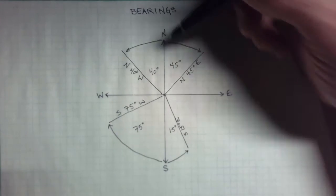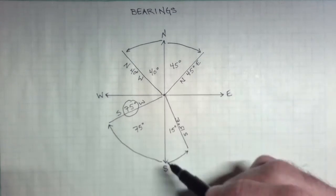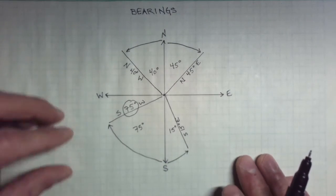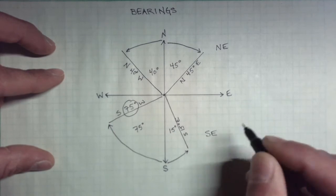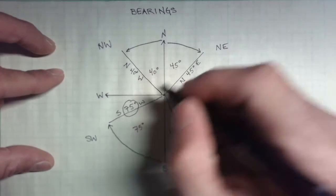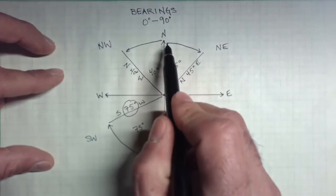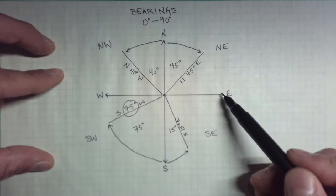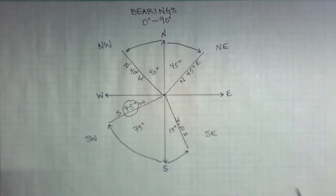So that's bearings — always from the north or south towards the east or west. The bearing angle is the angle from north or south towards a different direction. Bearings can be listed as northeast, southeast, southwest, or northwest. The bearing angle is always between 0 degrees and 90 degrees because we're always going from north to one of the other directions. If we go past 90 degrees, we're in the next quadrant and reference that angle from the south towards the east.